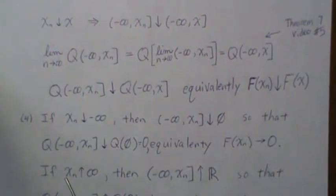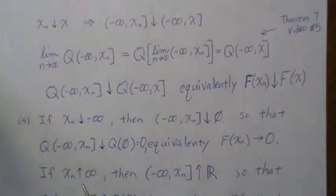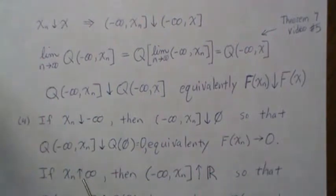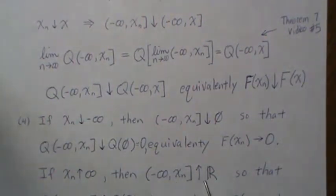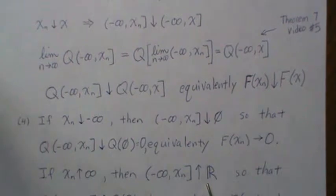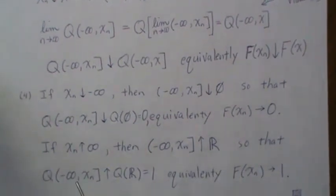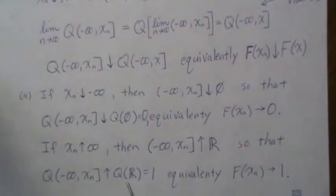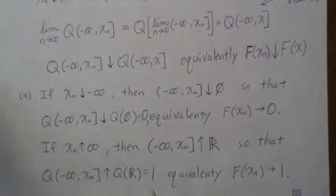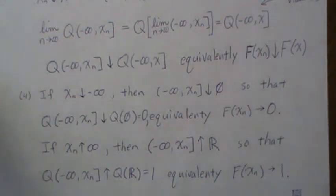Similarly, if xn increases to positive infinity, this set increases to the real number line. So this probability in the limit goes to the probability of the sample space, which is one because it's a probability measure. That's equivalent to saying F of xn equals one.